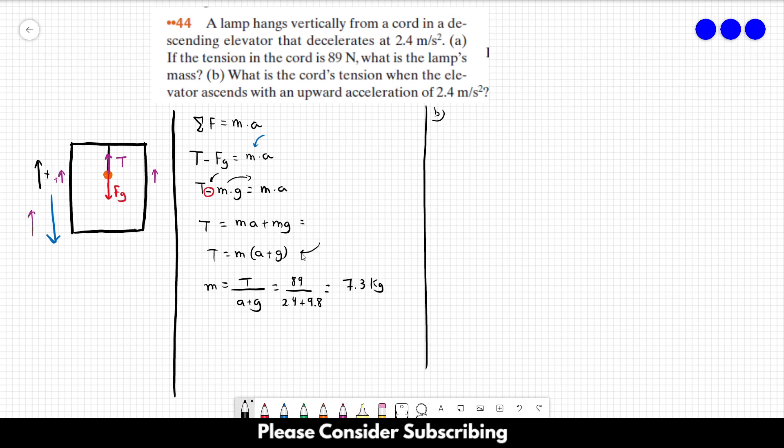So, we are going to use this equation to find the tension. So, the tension is equal to mass times acceleration plus gravity. Mass is 7.3. We just calculated it over here. The acceleration is, again, plus 2.4. And the acceleration of gravity is 9.8. And this gives us the same tension as before, 89 newtons.